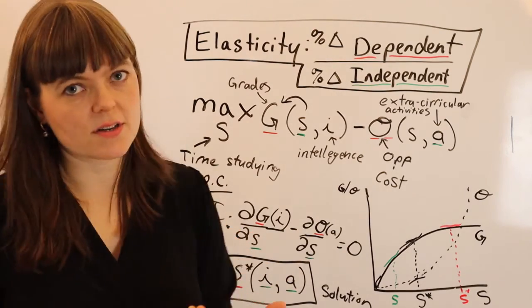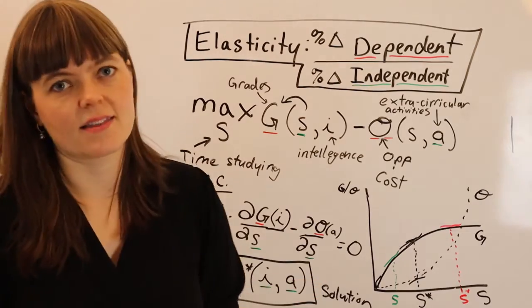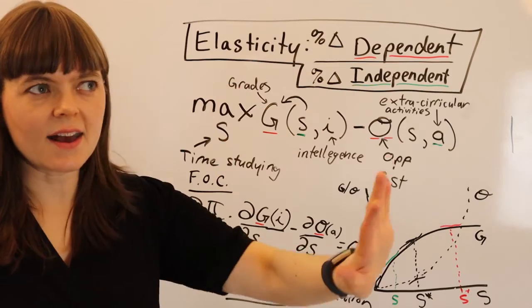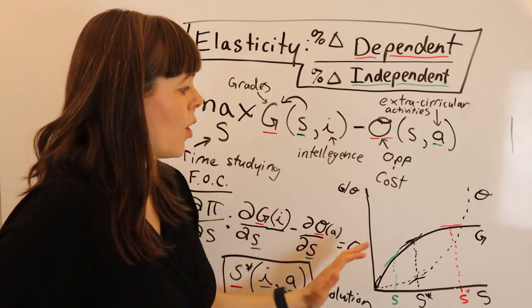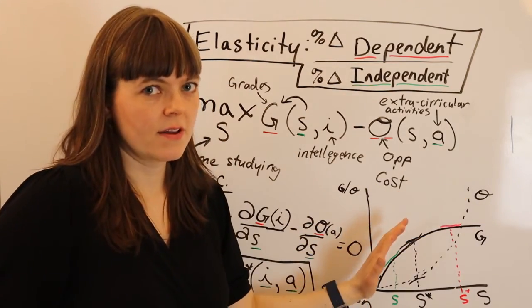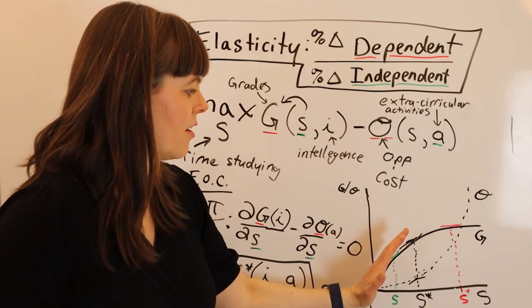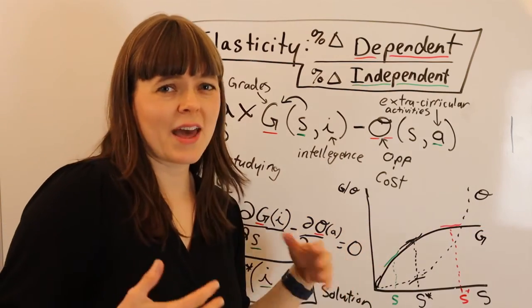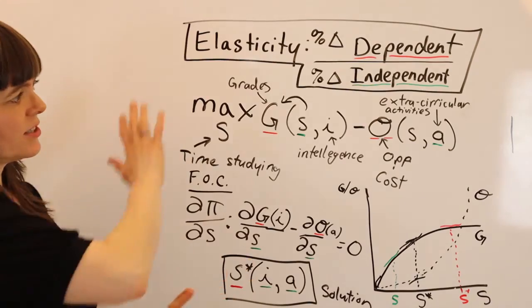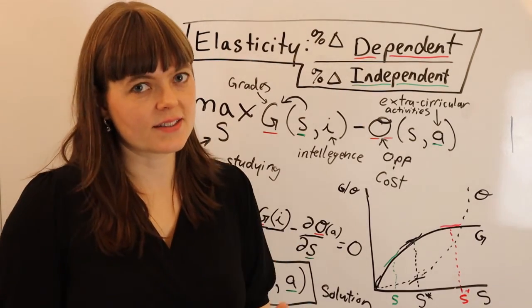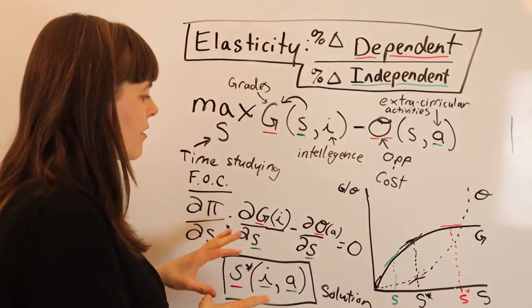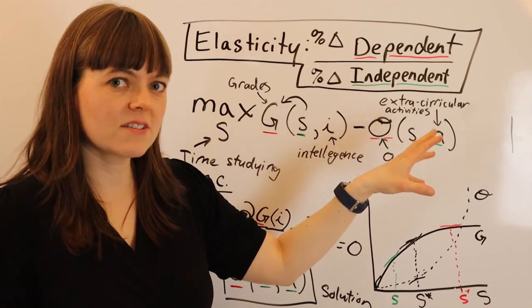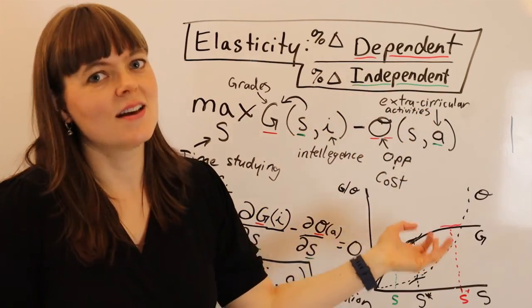The elasticity depends on where you are on the graph, and that's important when you analyze models and connect them with data. A lot of times you observe data points and have to figure out where on the graph that relationship is represented — are we on the steep part or the flat part, and how much will that change over time? This is just orienting you to how to use elasticity when thinking about economic models, how to recognize independent and dependent variables in your models, and how to connect that with data.